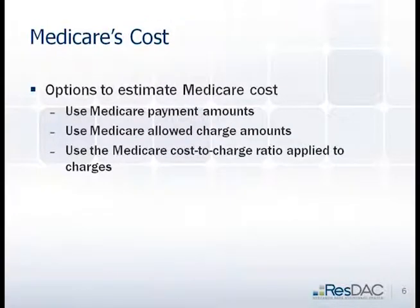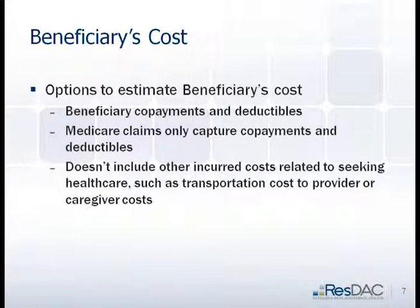If you're looking at what it costs the facility, you could look at payment amounts or allowed charge amounts, or use the Medicare cost-to-charge ratio applied to charges. Or if you're trying to include the beneficiary's cost, we do have copayments and deductibles, but there's no way to calculate costs incurred for things like transportation, caregiving, or similar items using cost reports or claims.